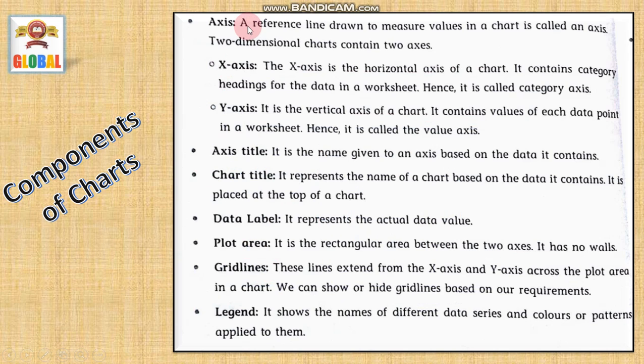Let us understand. Axis is a line drawn to measure values in a chart. In two-dimensional chart, two-dimensional chart contains two axis. That are x-axis and y-axis. X-axis is the horizontal axis of chart. It contains category heading for the data in a worksheet. Hence, it is called as a category axis. While the y-axis, it is a vertical axis of chart. It contains values of each data point in a worksheet. Hence, it is also called as a value axis. Remember, y-axis is also called as a value axis. While x-axis is also called as a category axis.